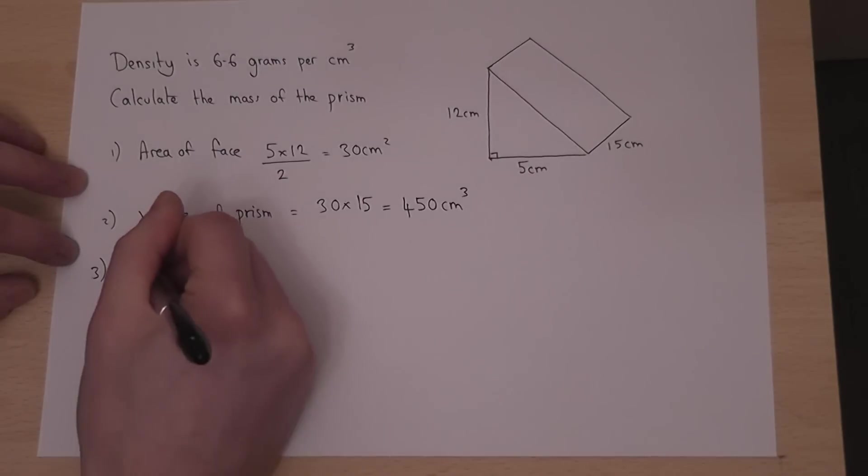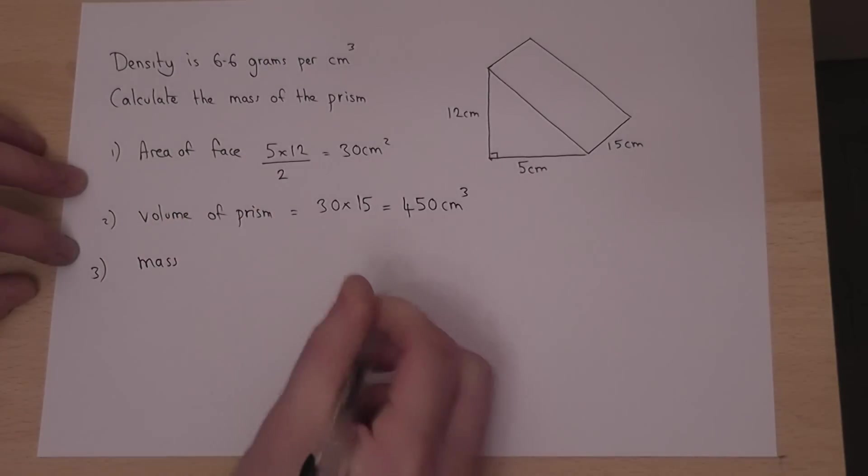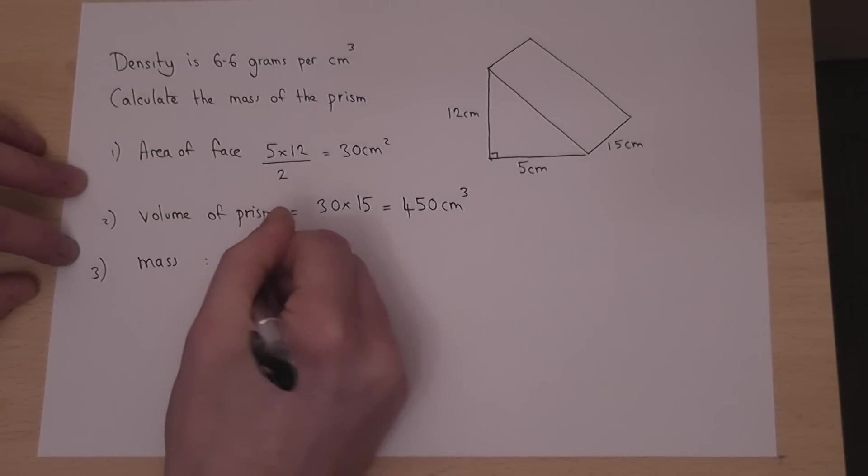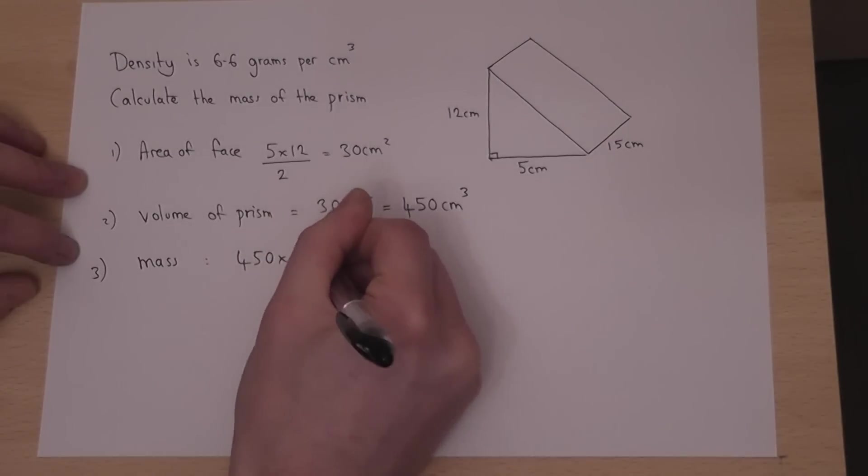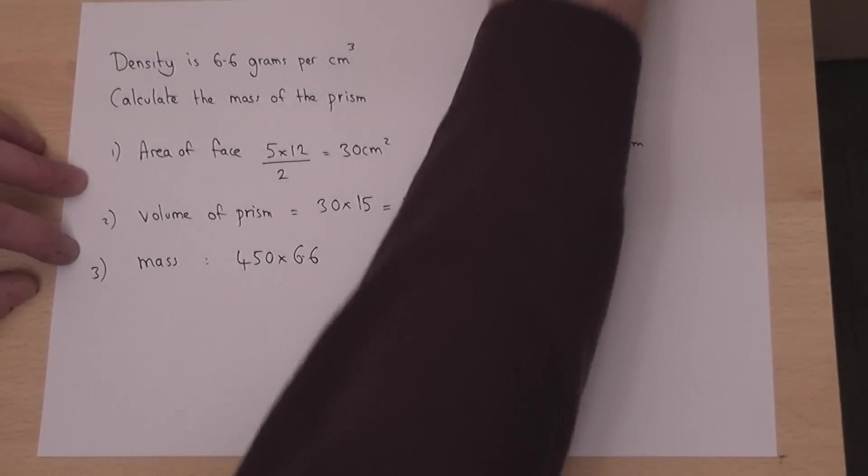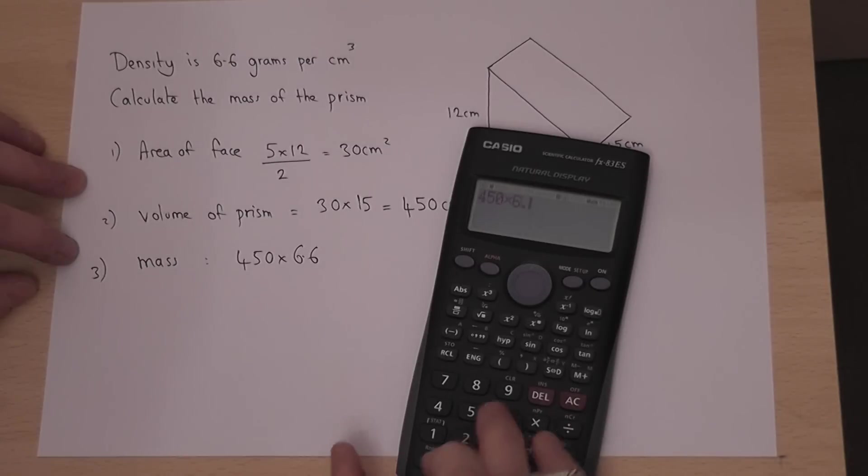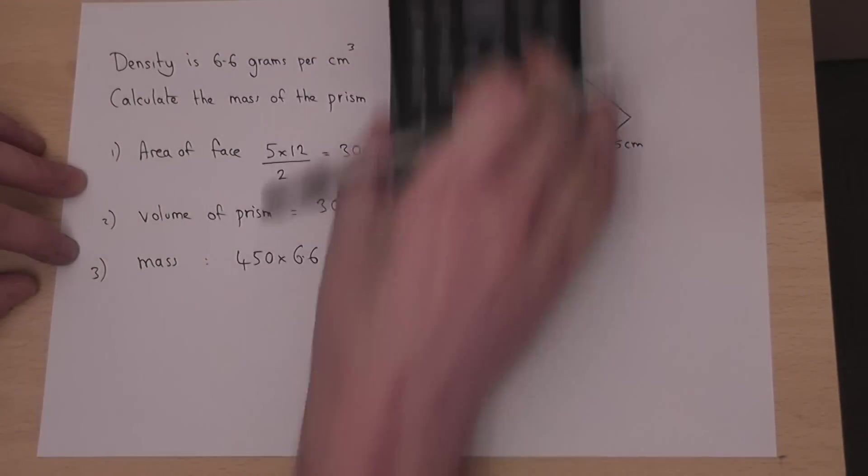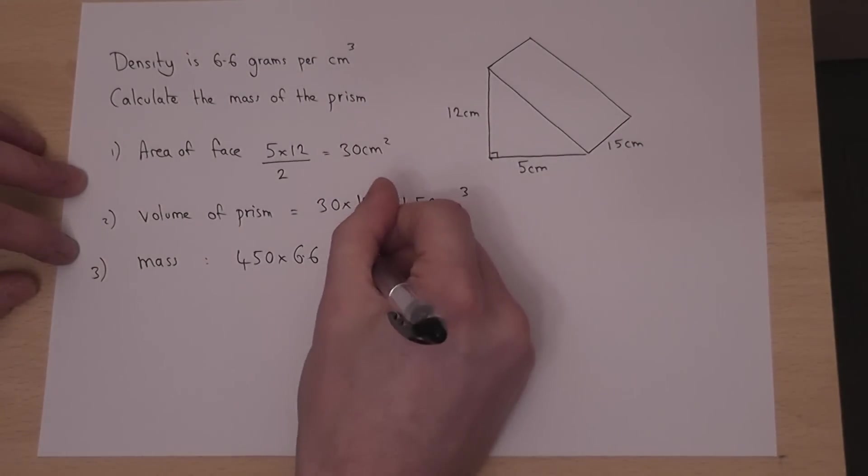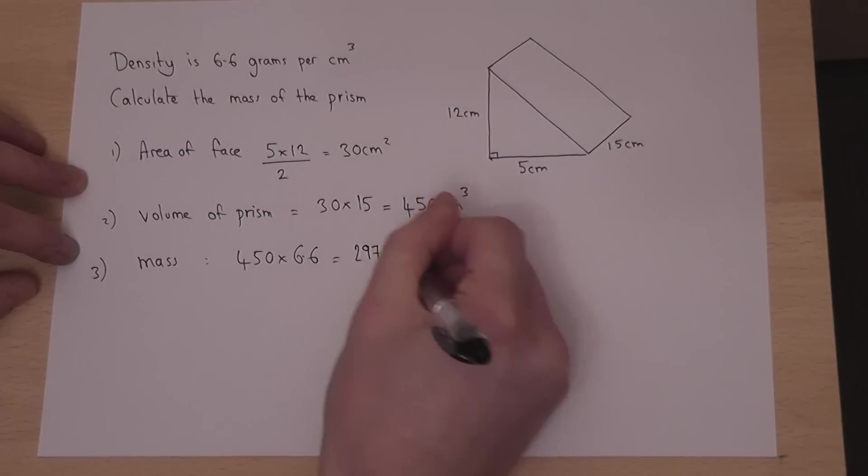Then, to find the mass, we just do the volume times by the density. So on our calculator, if we do 450 times by 6.6, we get 2970 grams.